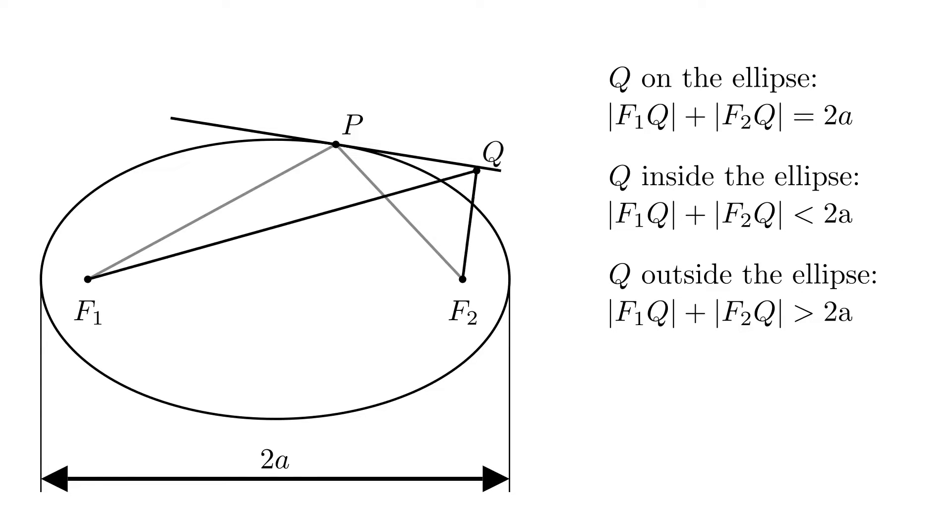In particular, we are interested when q is on the tangent. If q doesn't coincide with p, then q is outside the ellipse, so f1q plus f2q is greater than 2a. And since p is on the ellipse, then f1p plus f2p is equal to 2a.